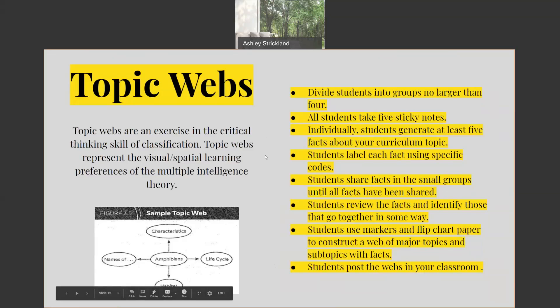You can see an example in Figure 3-5 where you have 'amphibians' and then four characteristics around the word. Topic webs represent the visual-spatial learning preferences of the multiple intelligences field, something also to consider. With topic webs, early readers and writers will be more limited in their ability to record their ideas.